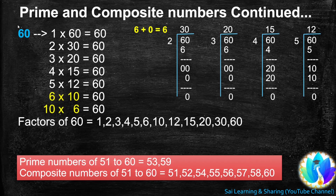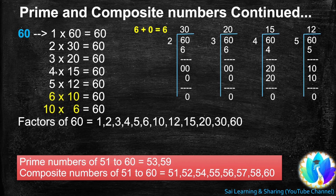Using the divisibility rule of 3: when we add the digits of 60, we get 6, and 6 is a multiple of 3. When we divide 60 by 3, we get quotient 20, so 20 is another factor of 60, and 3 times 20 equals 60. 60 is also a multiple of 4. When we divide 60 by 4, we get quotient 15, so 15 is another factor of 60, and 4 times 15 equals 60.